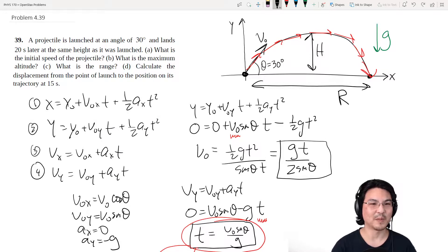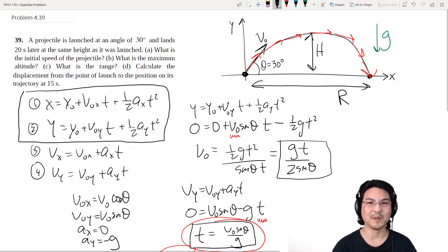Okay. Part d. Displacement. Again. That's these two. And what do we know? And what do we not know? We don't know these two. But everything else we know. We got the initial velocity. Right here. The time is 15 seconds. So you just plug in values. And that's part d.